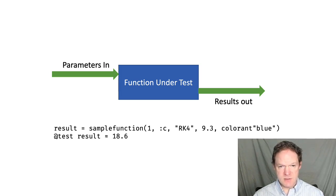The setup is that we're writing a unit test for a function, which we call the function under test. We send parameters in and it returns results. Then we check those results. That's a unit test.